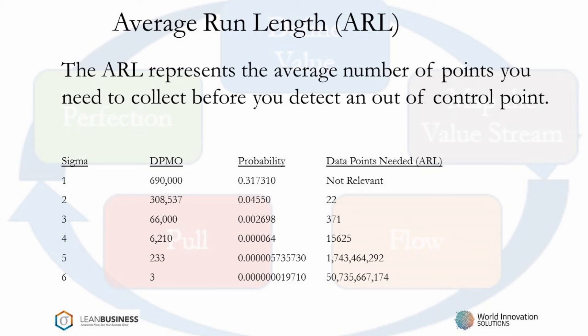Some things to note from this chart: the One Sigma ARL is labeled not relevant. This is reasonable because ARL is not a law, but guidance. Guidance often fails at the extremes. At the other extreme, ARL fails at Six Sigma — the formula's calculation for the number of points to collect is 50 billion. Whether this number is exactly right or not, it demonstrates the inability to collect enough points at high Sigma levels to characterize a process.